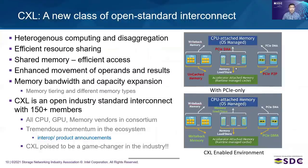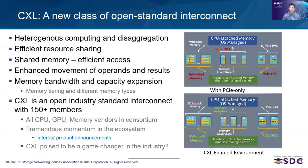Now let's see why CXL is a new class of open standard interconnect. The picture on the top shows the system view with PCI Express only. Memory attached to the CPU, such as DRAM, is mapped as coherent memory — data consistency is guaranteed by hardware. On the other hand, memory connected to a PCI device is mapped to the system memory as uncacheable memory or memory-mapped I/O space. So when a CPU wants to access DRAM memory, it can simply cache the data and do reads; if it updates, it will later do a write-back. Hardware takes care of data consistency.